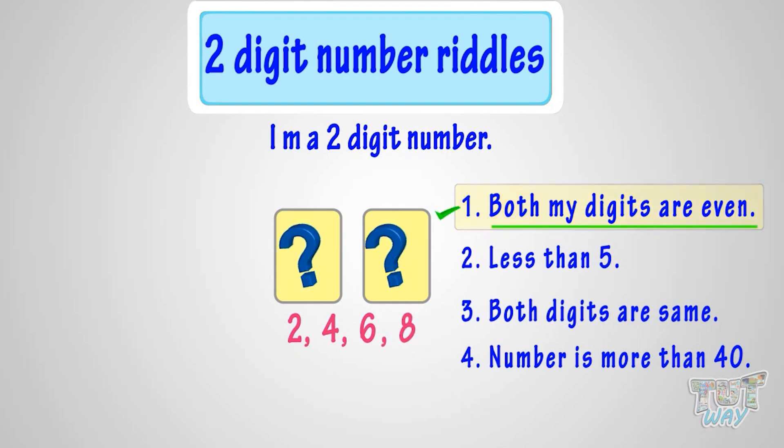Using the second clue, numbers are less than 5. It means either 2 or 4.